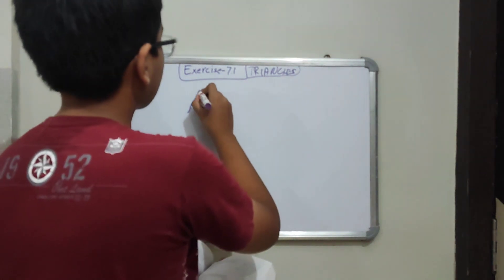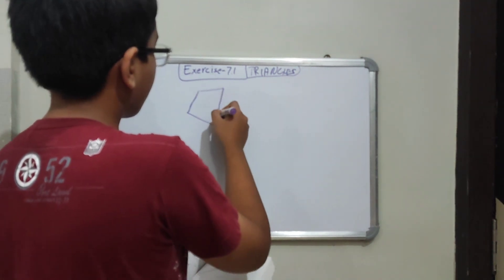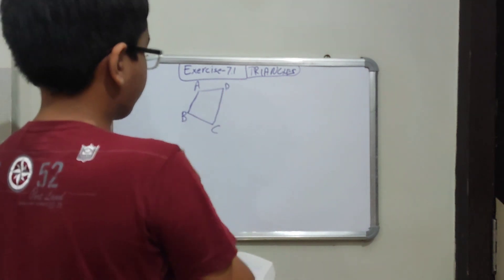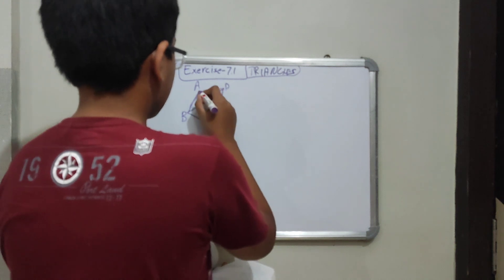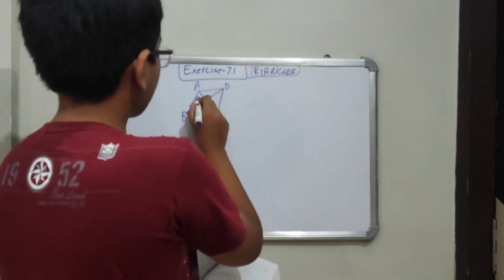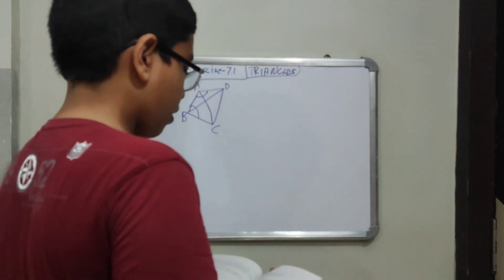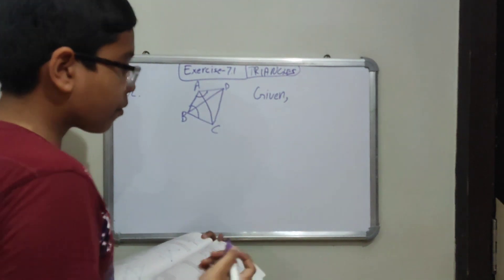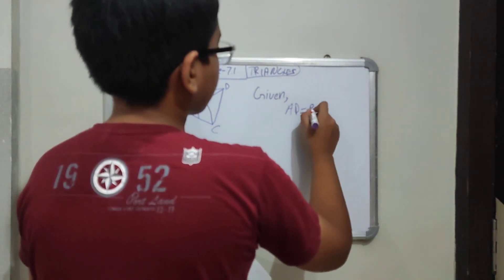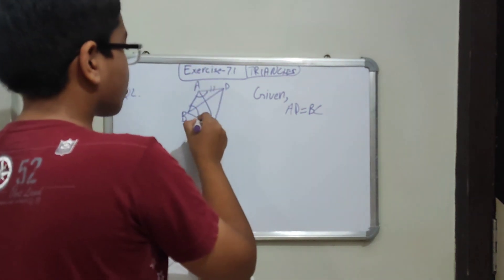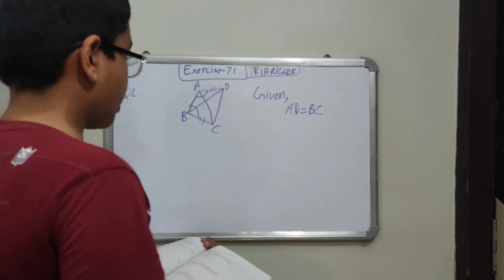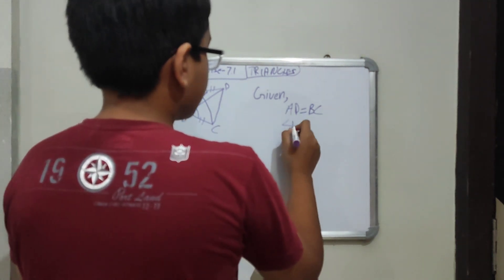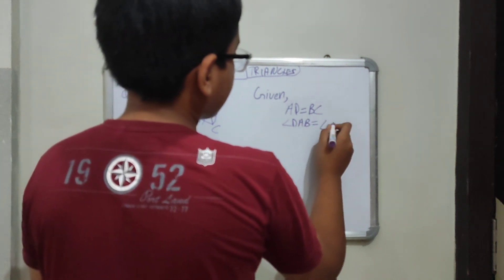What does this mean? So A, B, C, and this is D. Given: AD equals to BC, and angle DAB is equal to angle CBA.